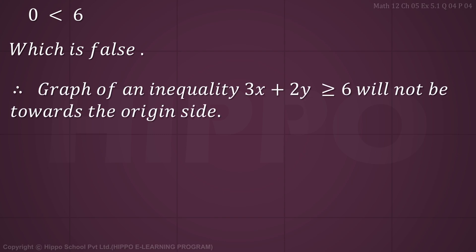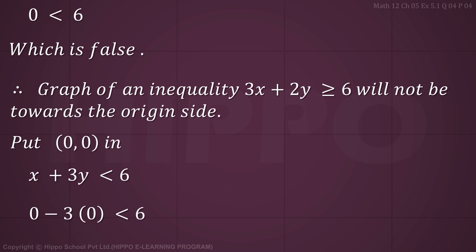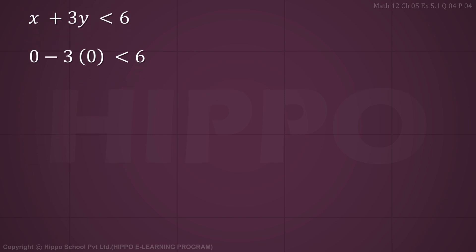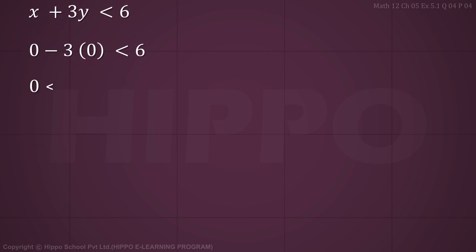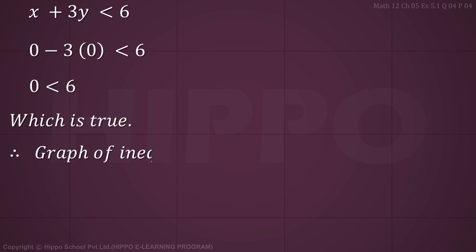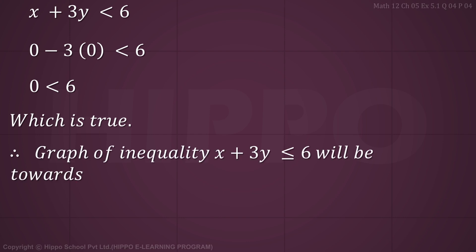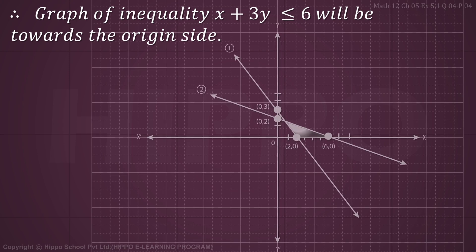Since the result is false, the shaded region for 3x + 2y ≥ 6 will not be towards the origin side. Now put (0, 0) in x + 3y ≤ 6: 0 + 3(0) = 0 ≤ 6, which is true. So x + 3y ≤ 6 will be shaded towards the origin side.